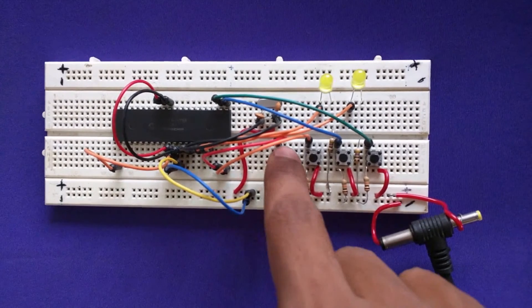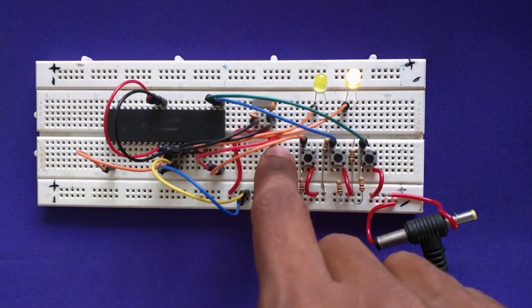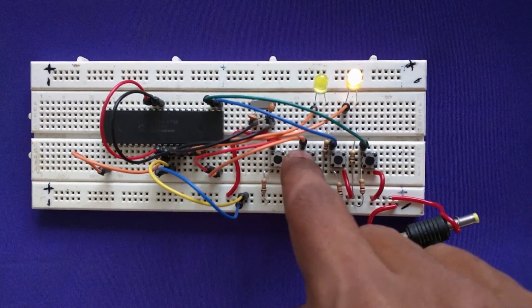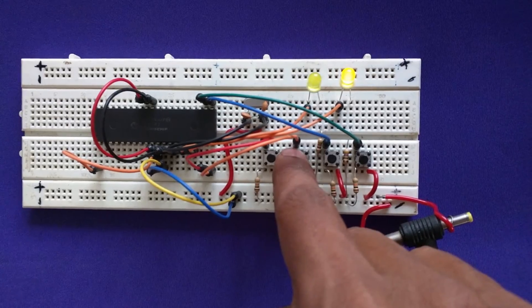Now let's see the output of our PWM experiment. In this experiment you can see that the LED brightness is changing with PWM duty cycle.